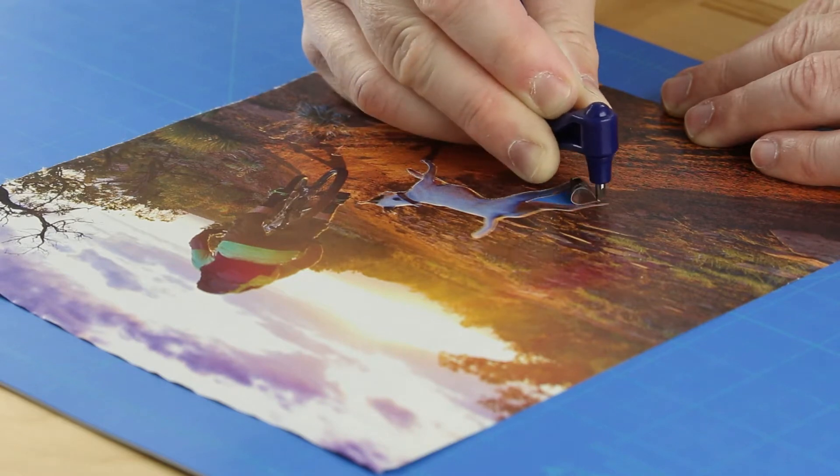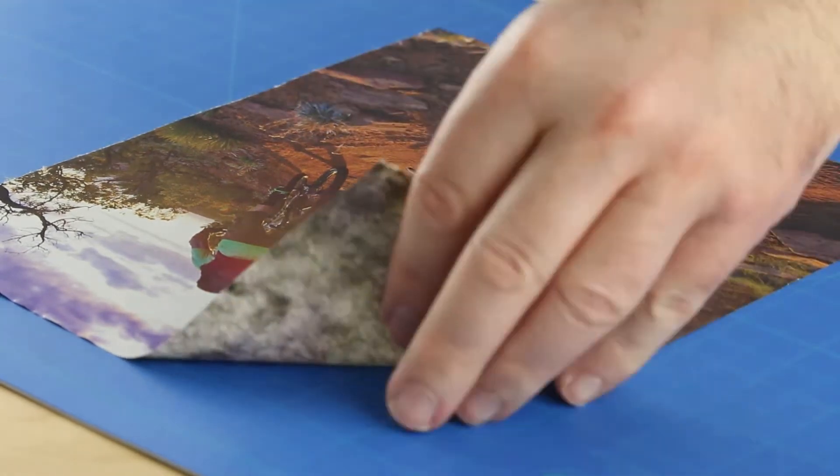GyroCut works best on a self-healing cutting mat but, in a pinch, can also be used with a cutting board.